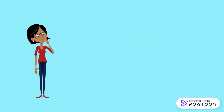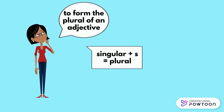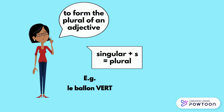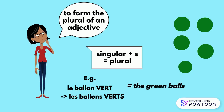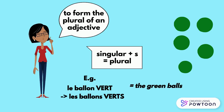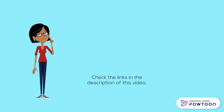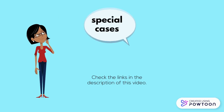And generally, to form the plural of an adjective, you add an S to the singular form. For instance, le ballon vert, les ballons verts — the green balls. There is also another video about the special cases for the plural.